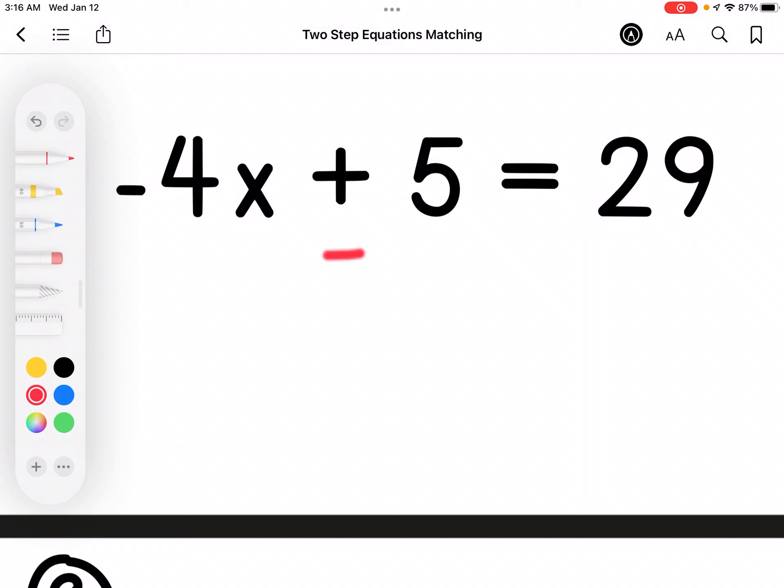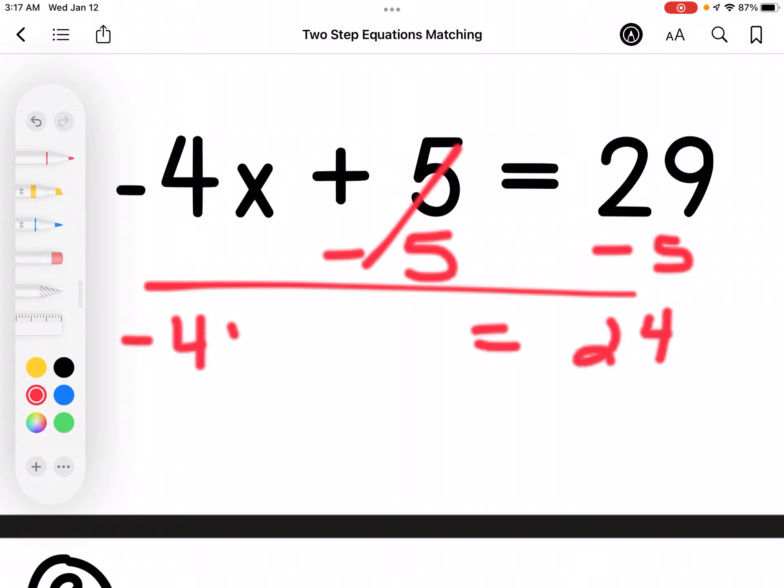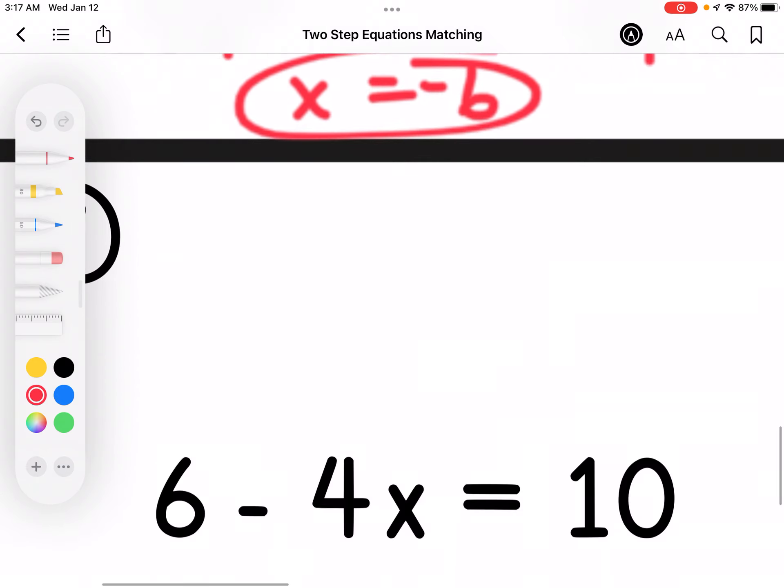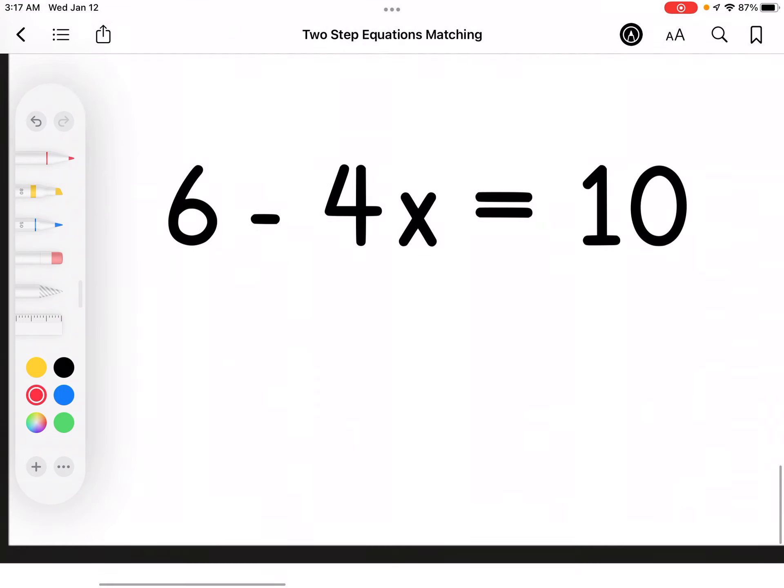I'm going to subtract 5 on each side. So I get 24, and divide by negative 4 on each side. Remember, a positive divided by a negative is going to be a negative solution. Because when I'm dividing or multiplying, my signs are different, my answer is going to be negative.